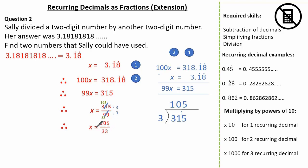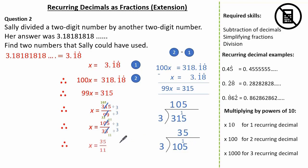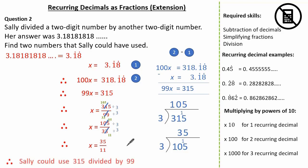Now we might be able to cancel this down a little more by 3. We can definitely divide 33 by 3, so let's look at the numerator. 1 add 0 add 5 is 6, so we know the numerator can be divided by 3. How many times does 3 go into 1? None. But how many times does 3 go into 10? 3, remaining 1. How many times does 3 go into 15? 5. So therefore, we know x is 35 over 11 in its simplest form. Going back to our question, we can see it asks for a 2-digit number by a 2-digit number. Sally could use 315 by 99, but they're not 2 digits. We could use 105 by 33, but they're not 2 digits. So our final answer is 35 by 11.